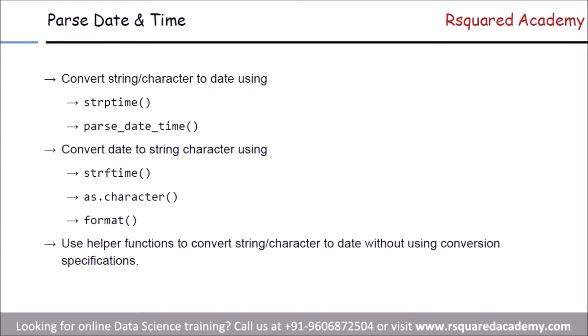strptime will convert character data to POSIXLT class. You will use this when converting from character data to datetime objects. On the other hand, if you want to convert datetime data to character data or string data, you can use strftime, format, and as.character functions. These functions will convert POSIXCT or POSIXLT objects to character.